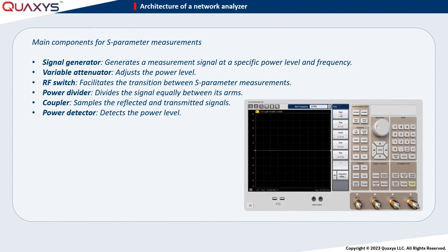An RF switch facilitates the transition between S-parameter measurements. One switch position directs the signal into port 1, enabling the measurement of S11 and S21. Conversely, the other switch position routes the signal to port 2, facilitating the measurement of S22 and S12.